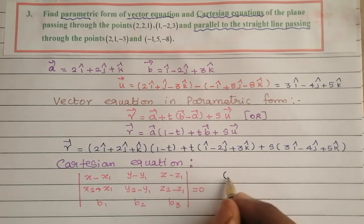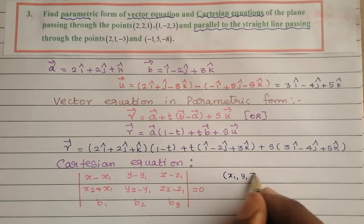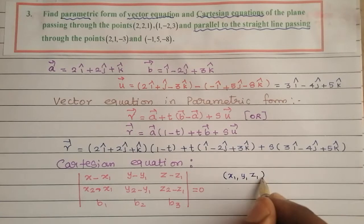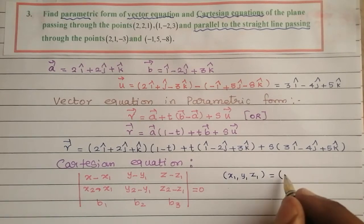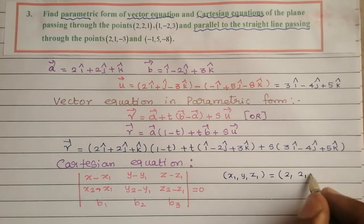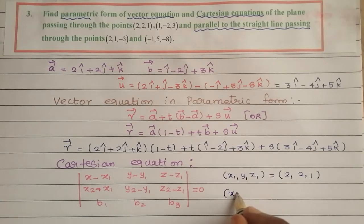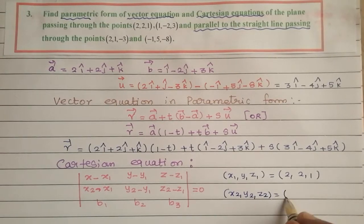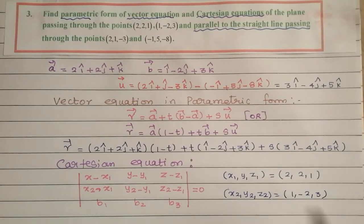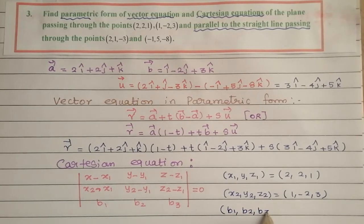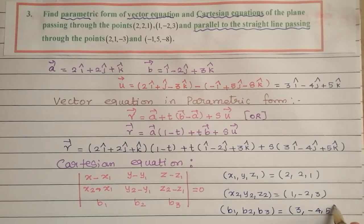Here, (x1, y1, z1) = (2, 2, 1) and (x2, y2, z2) = (1, -2, 3). The direction vector components are (b1, b2, b3) = (3, -4, 5).